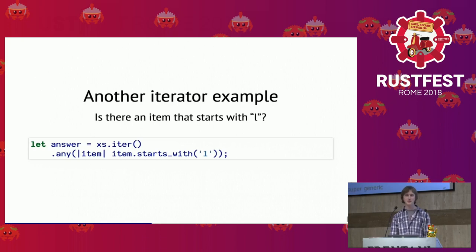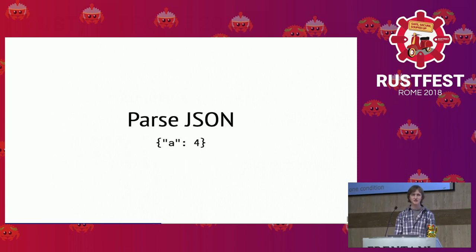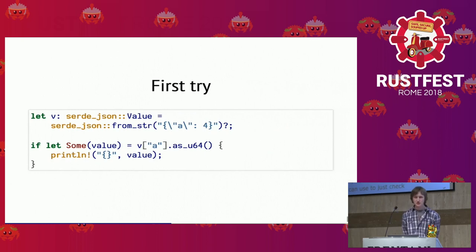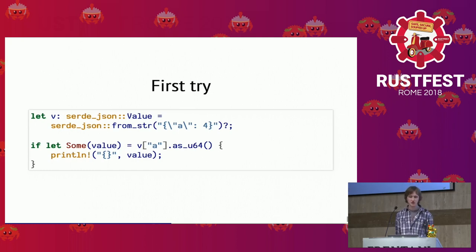Let's look at another example: parsing JSON. JSON is a very simple format. You know there is serde_json and it has a value type. If you have a string that looks like JSON, you can get a value out of it. And if there is some value that happens to be a number, you can print it.